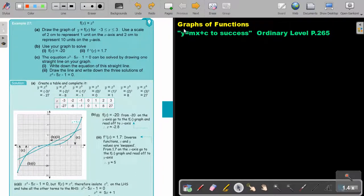In this video, we are going to continue with graphs of functions. You will find this on page 265 in the Namibia Ordinary Level Mathematics textbook y equals mx plus c to success. Let's look at an example. f(x) equals x to the power of 3, so this is a cubic function. Draw the graph from negative 3 to 3. Use a scale of 2 cm to represent 1 unit on the x-axis and 2 cm to represent 10 units on the y-axis.